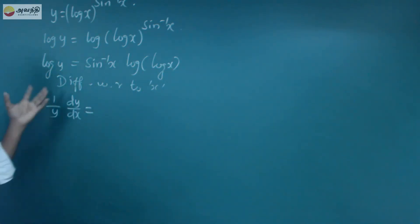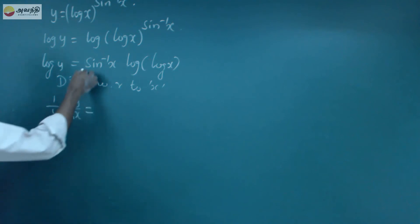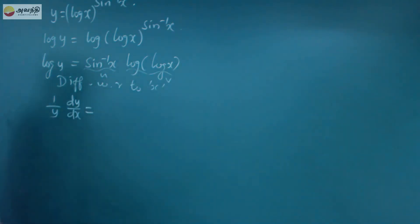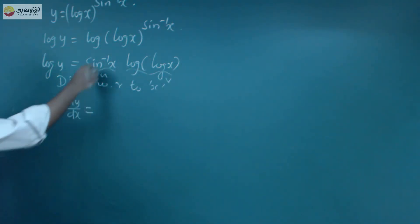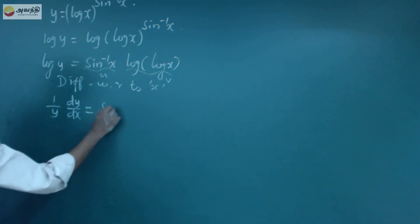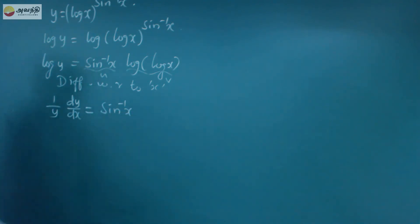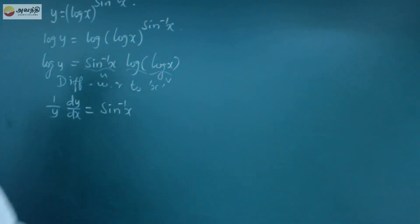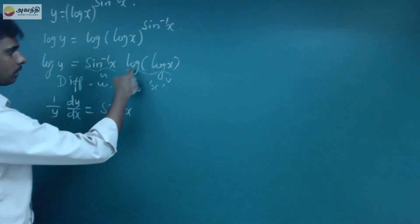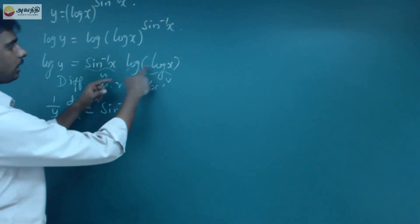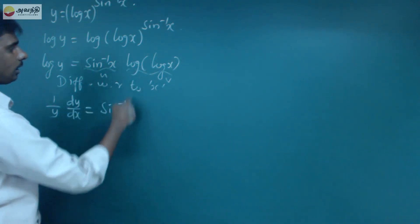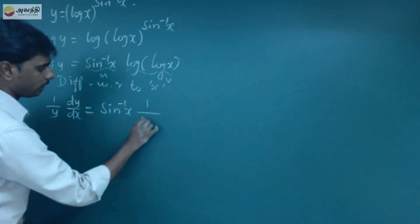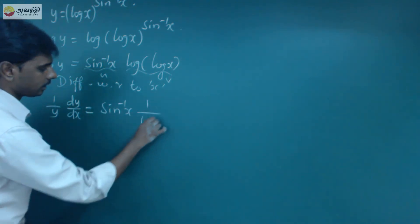This is the uv method, so this is u and v. u is sin inverse x, and v is log of log x. The differentiation of log of log x: differentiation of log x gives 1 by log x, and then again log differentiation gives 1 by log x times 1 by x.